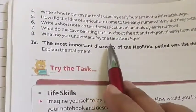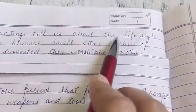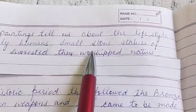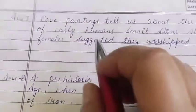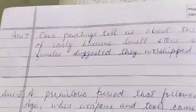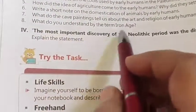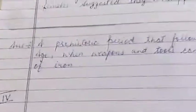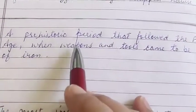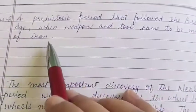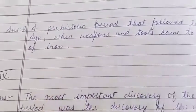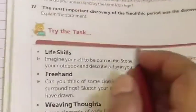Question: what do cave paintings tell us about the art and religion of early humans? These cave paintings tell us about the lifestyle of early humans. Small stone statues of females suggest they worshipped nature. Last question: what do you understand by the term Iron Age? Answer: a prehistoric period that followed the Bronze Age, when weapons and tools came to be made of iron — that period is called the Iron Age.